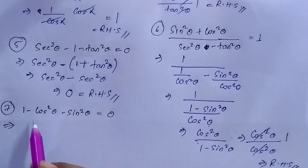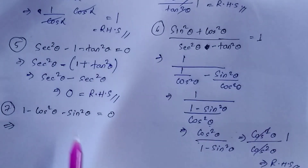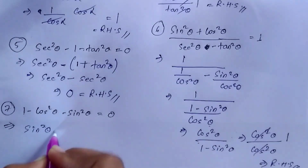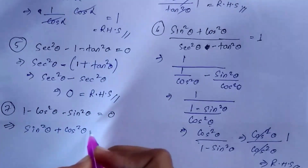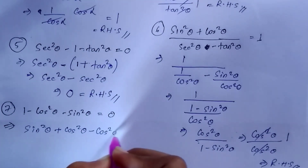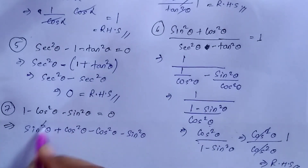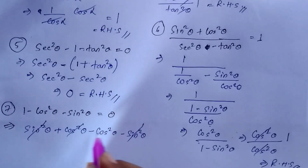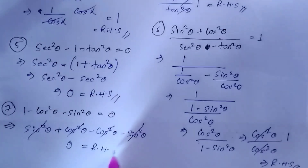Question number 7: prove that 1 − cos²θ − sin²θ = 0. We know 1 = sin²θ + cos²θ, so we write sin²θ + cos²θ − cos²θ − sin²θ. The +sin²θ and −sin²θ cancel, and +cos²θ and −cos²θ cancel, and we are left with 0, which equals your RHS. Hence proved.